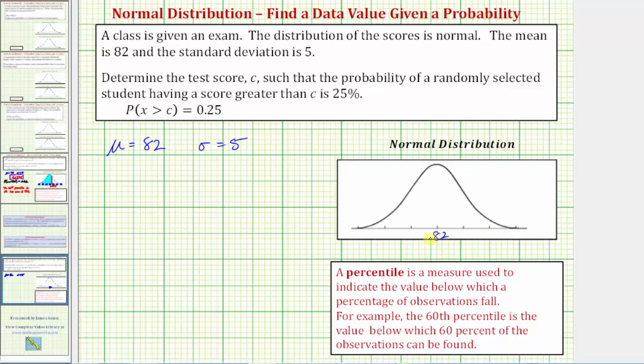So to the right we'd have 82 plus five, which is equal to 87. 87 plus five is equal to 92. 92 plus five is equal to 97.